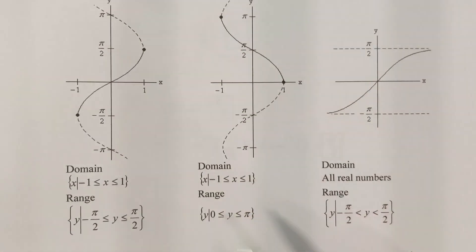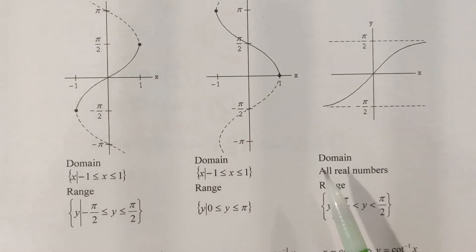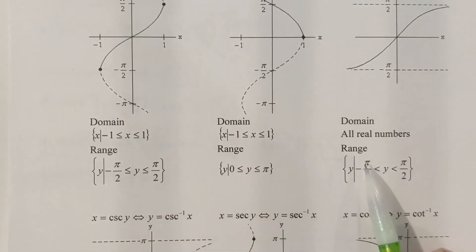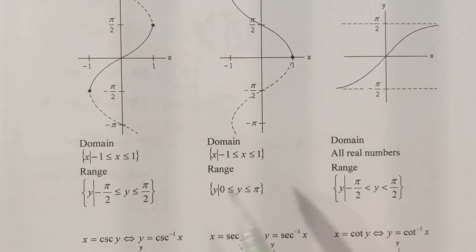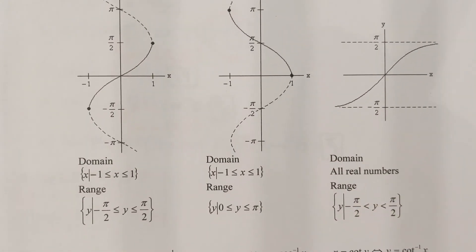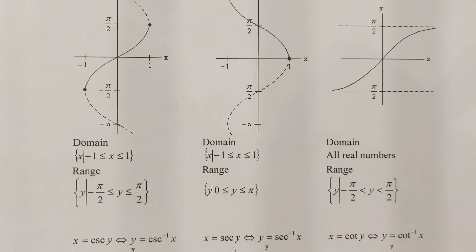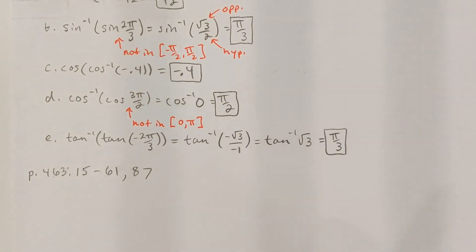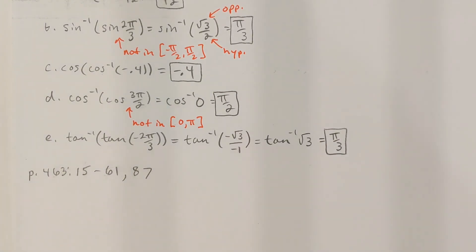Notice how I'm referring to this sheet a lot, specifically to get the range of whatever the inverse trig function we're dealing with. You want to keep this sheet handy. We're done with section 7.1. Here are the homework problems on page 463.